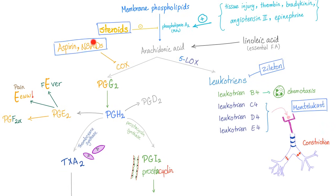Now for pharmacology. Membrane phospholipid → phospholipase A2 → arachidonic acid. Who inhibits phospholipase A2? Steroids. That's why steroids are the best anti-inflammatory ever known, because they inhibit both prostaglandins and leukotrienes — all inflammatory mediators. What activates phospholipase A2? Tissue injury, because inflammation fights bacteria and other threats.